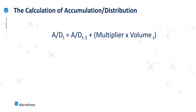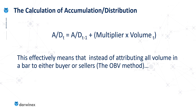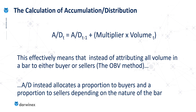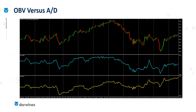The accumulation distribution calculation is actually very similar to OBV, except this time we're using that multiplier value to determine how much volume is added or subtracted from the previous value. That multiplier value always ranges from a maximum of plus one down to a minimum of minus one. This should produce a more accurate volume flow compared with the more coarse approach taken by OBV, by allocating an appropriate proportion of volume to the indicator.